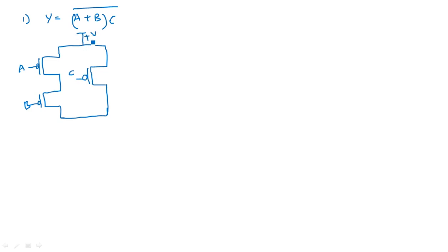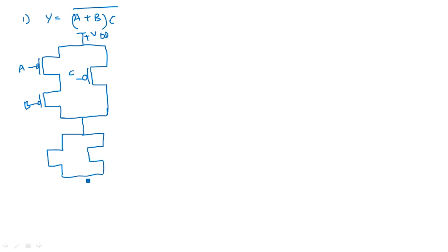This is VDD. The PMOS transistor logic is in between these two. Now, in the NMOS realization, A and B are in parallel. For this parallel connection, the C input is in series. So A, B, and C — this is the output Y.